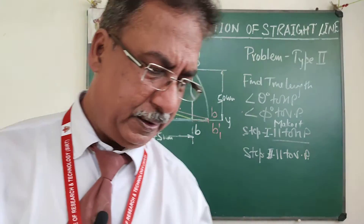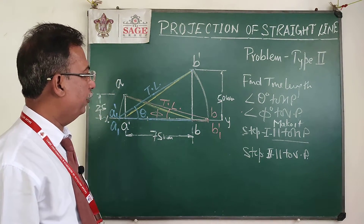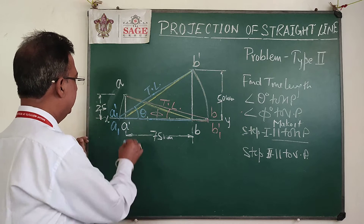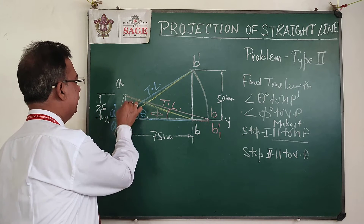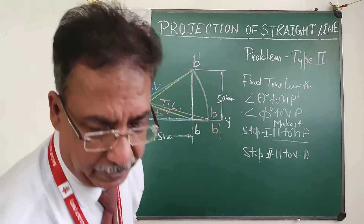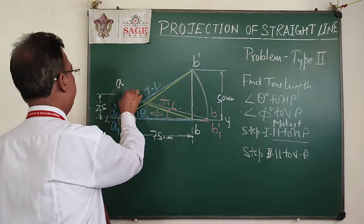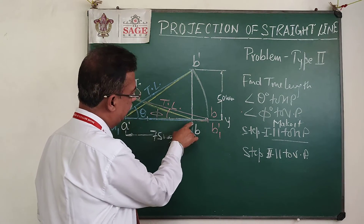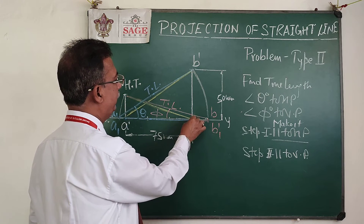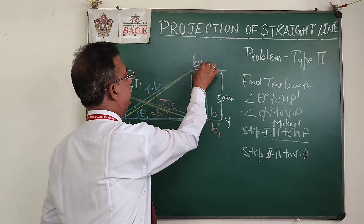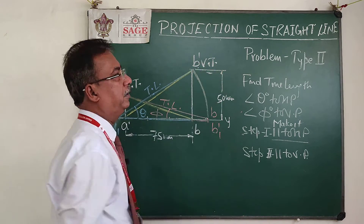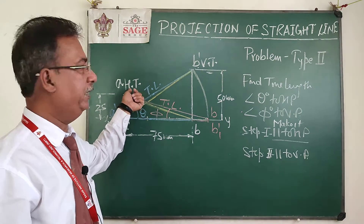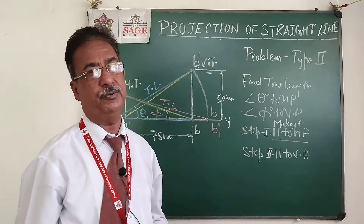As discussed previously, to find the traces of the line: the front view already cuts the XY line, so that point is H and it is our HT. Point A will also be point H. Similarly, the top view cuts the XY line at point B, which is our small V, and the perpendicular from it gives B dash as our VT. So if a point is on the HP its top view is the HT, and if a point is on the VP its front view is the VT.